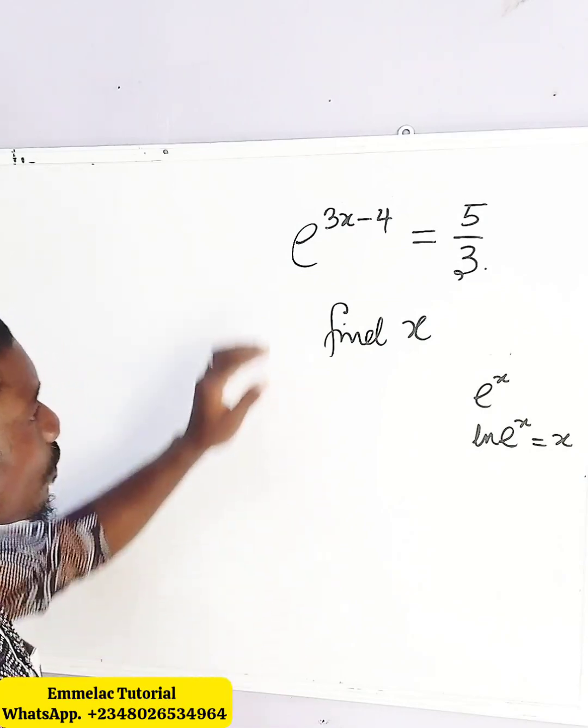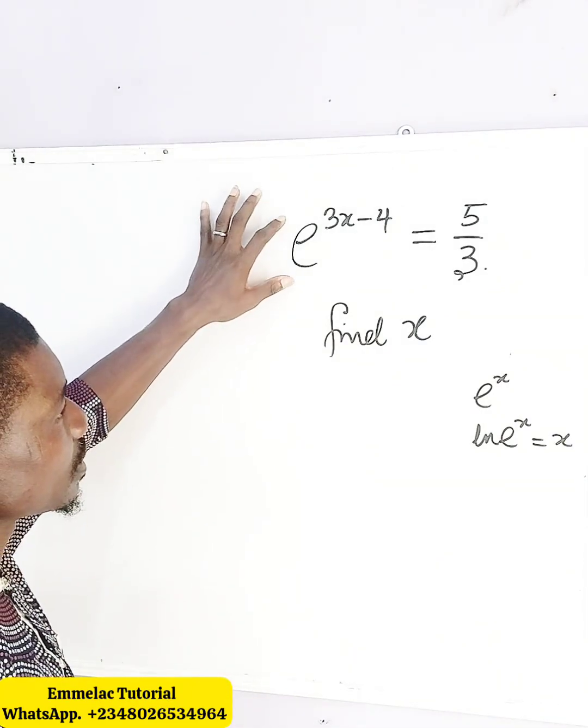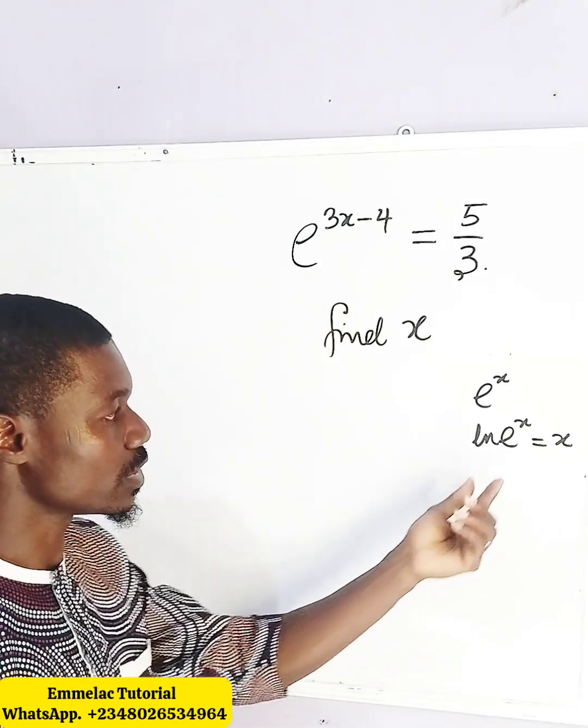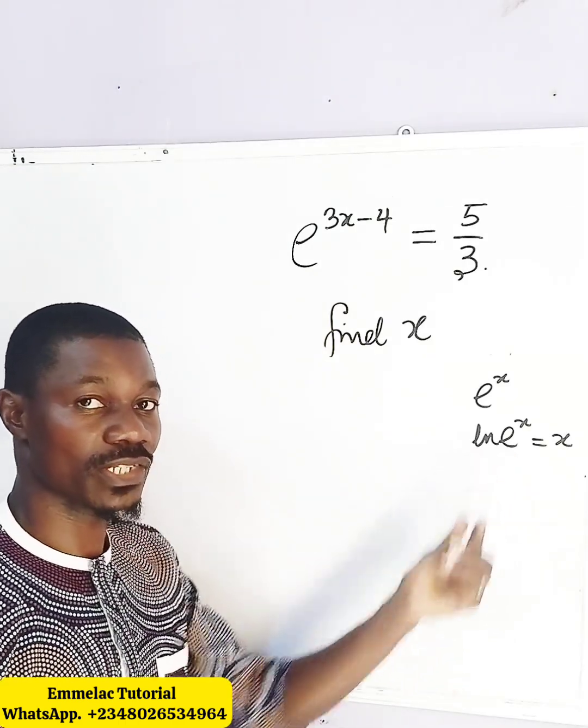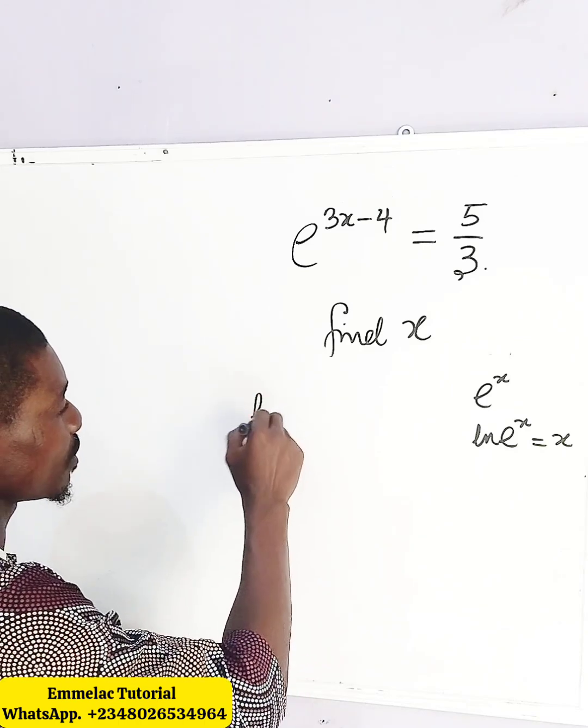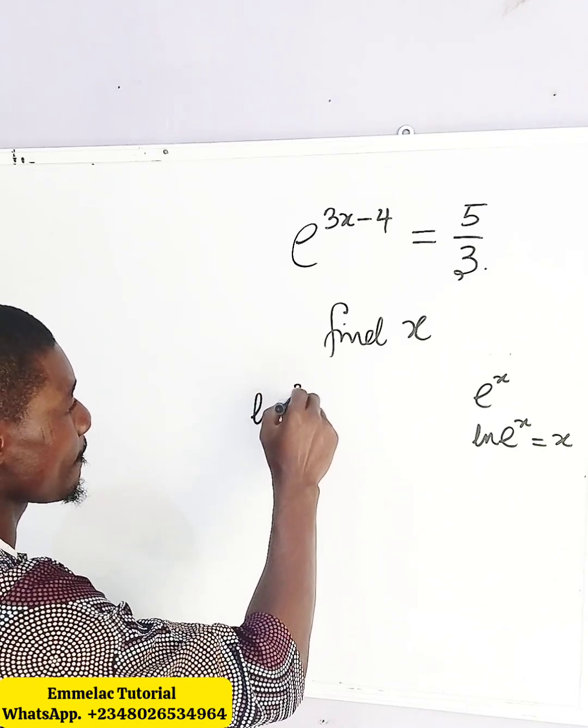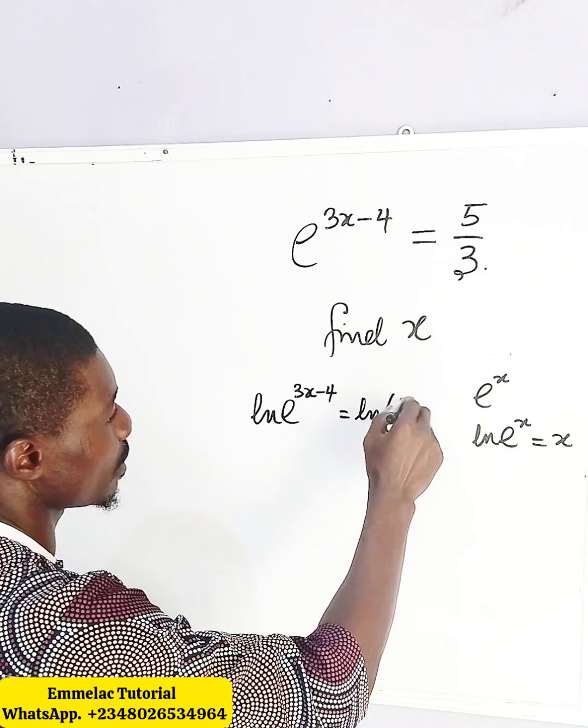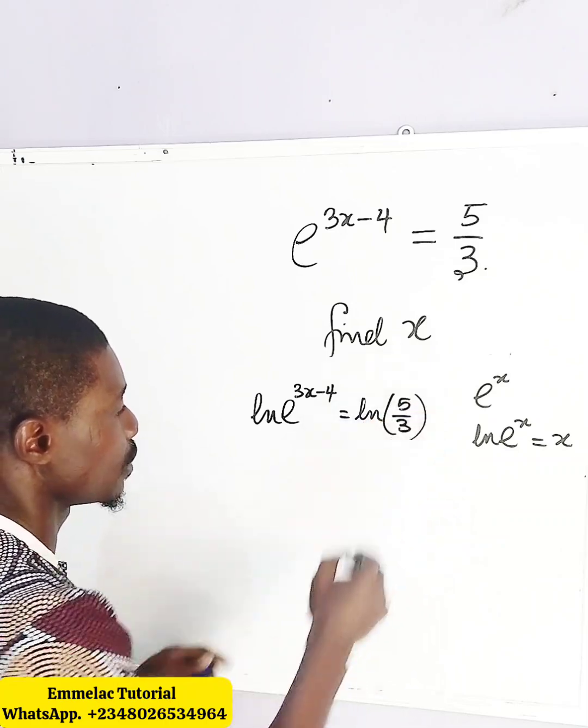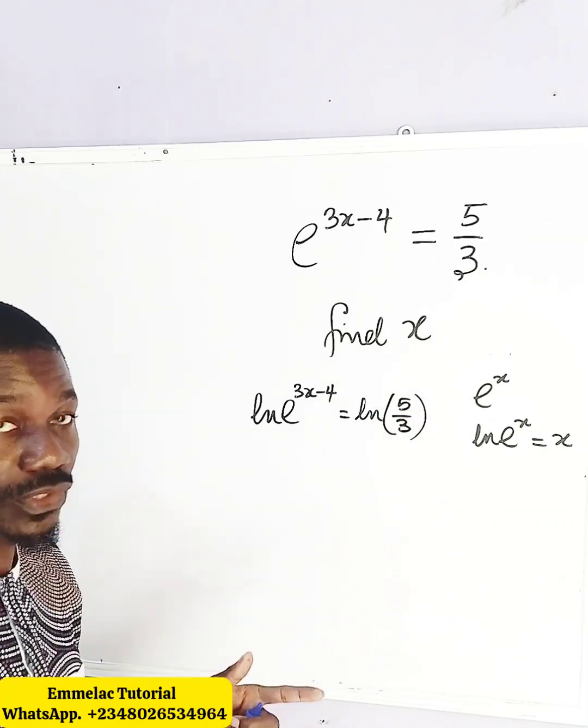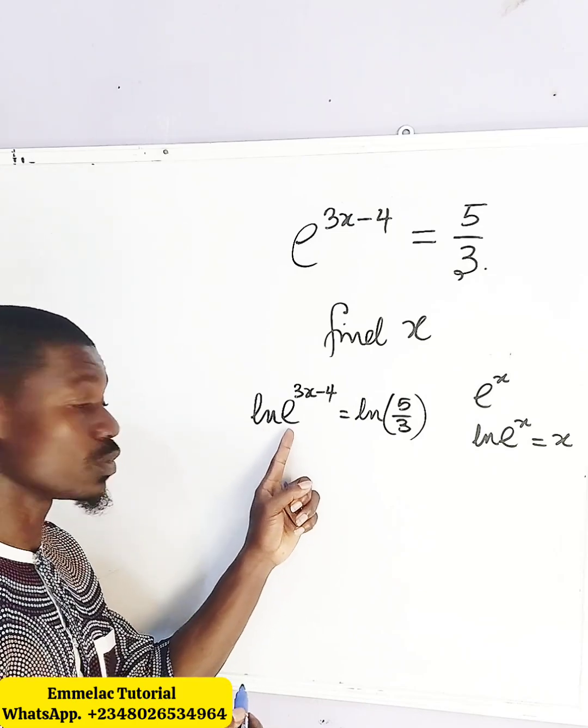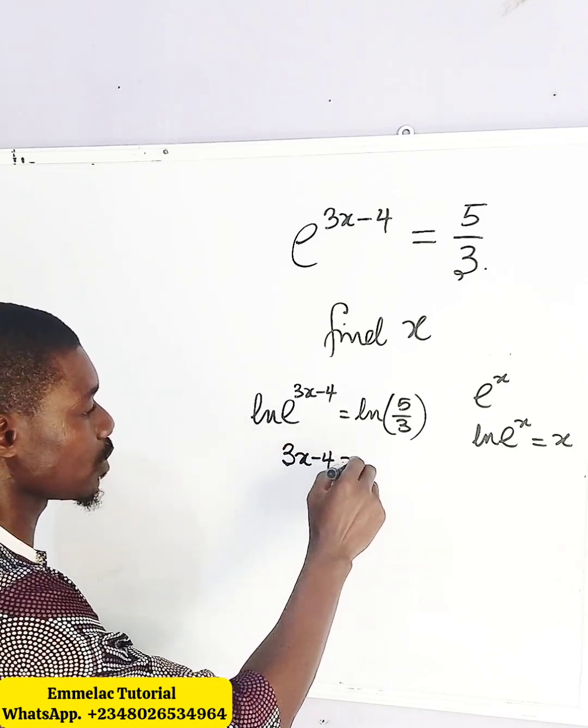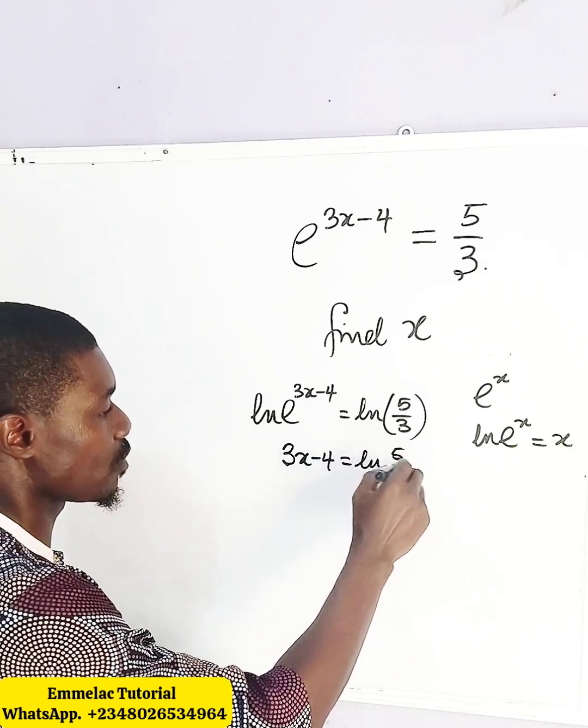So for us to find x here, first of all, let us undo the exponent. By doing so, we will need to apply the natural log to both sides of the equation. So here we have ln of e^(3x-4), then here we have ln of 5 over 3. We've applied the natural log to both sides. This natural log will undo the exponent, leaving behind 3x minus 4 equals the natural log of 5 over 3.